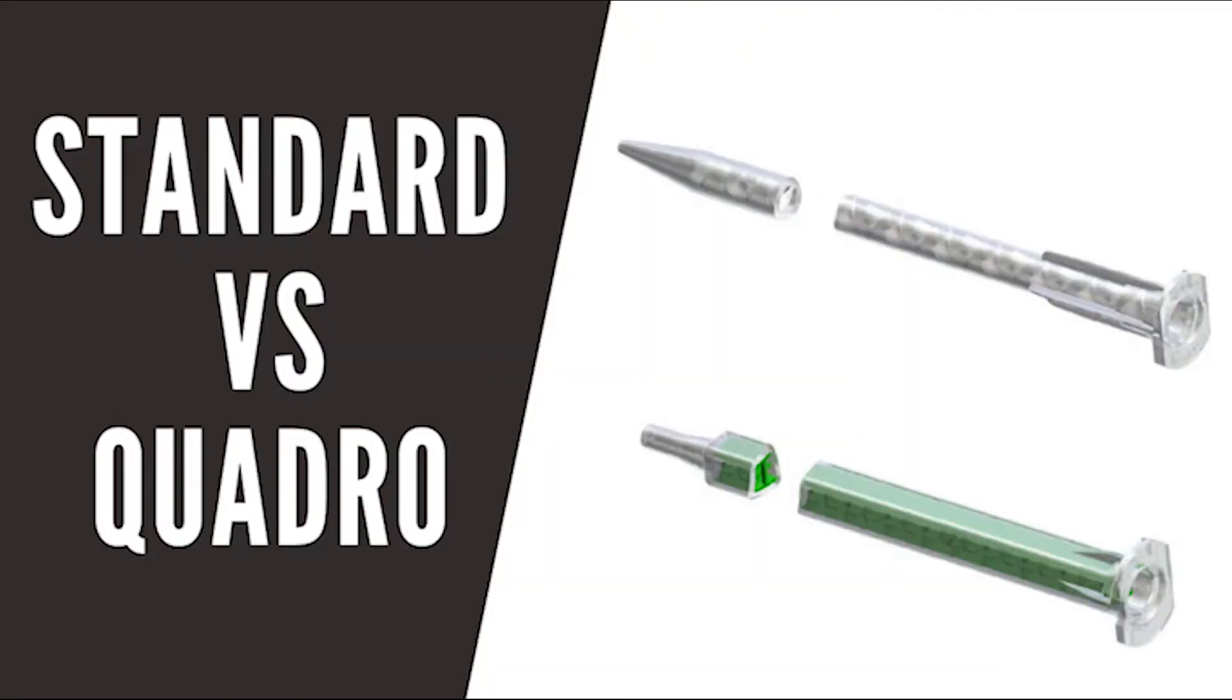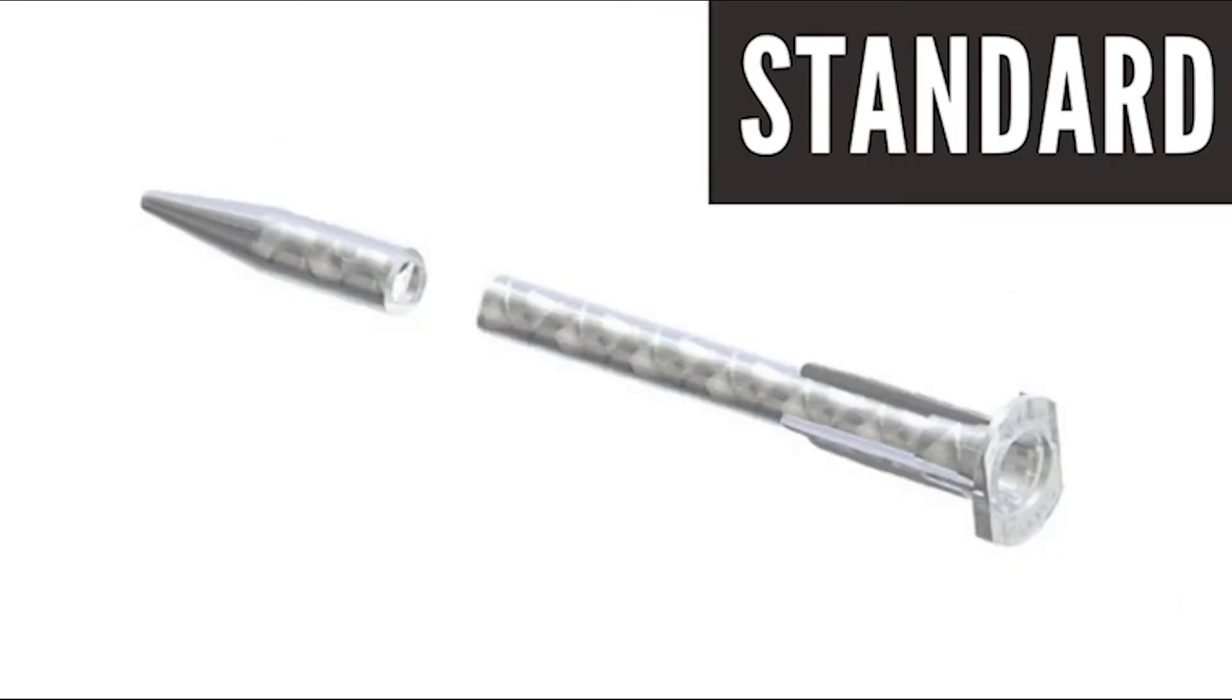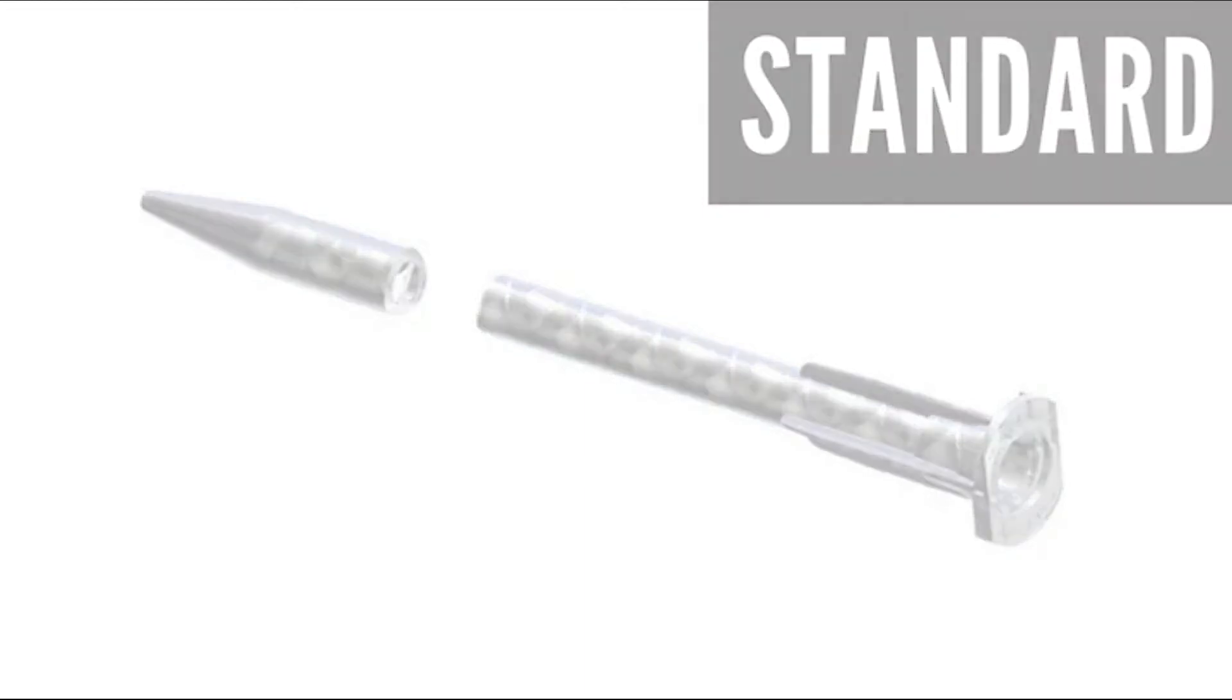Standard vs. Quadro. Before we dig into the different sizes and connections on static mixer nozzles, we're going to briefly discuss the difference between standard and Quadro, also known as turbo mixers. Standard static mixers are the oldest technology in two-part adhesive dispensing. These nozzles are round and come in a wide range of connection types. Standard mixers typically require longer nozzles and more mixing elements to create the same mixing quality as Quadro mixers.